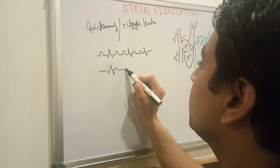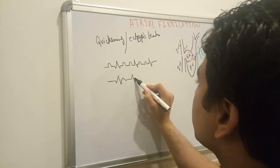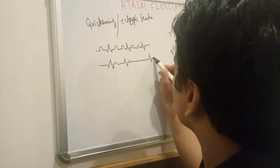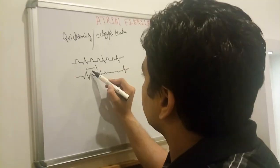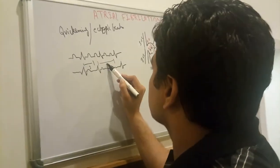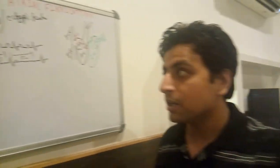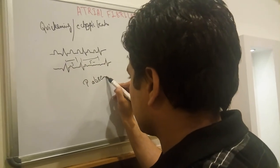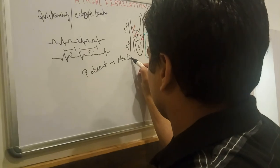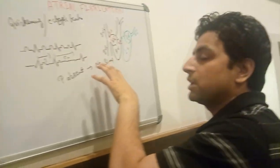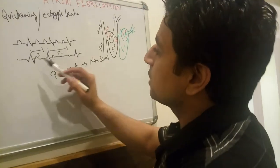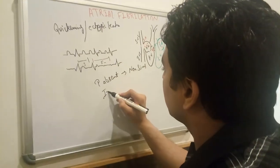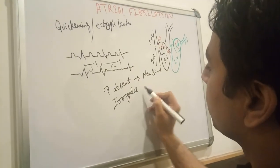In atrial fibrillation there are fibrillating waves, then QRS complex, then T wave. The R-R distance varies — here it is three large boxes, there it is five large boxes. So the first important ECG finding is absent P wave — non-sinus. The R-R interval is regular in normal ECG, but in atrial fibrillation the R-R interval is irregular.